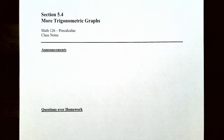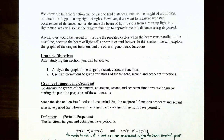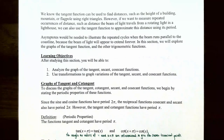Hi everyone, this is Vestor Primitant. This video will talk about more trigonometric graphs. We've already seen the tangent function can be used to find distances such as the height of a building, mountain, or flagpole using right triangles. However, if we want to measure repeated occurrences of distance — such as the distance a beam of light travels from a rotating light in a lighthouse — we're going to use the tangent function to approximate the distance using its period. Asymptotes will be needed to illustrate the repeated cycles when the beam runs parallel to the coastline, because the beam of light will actually appear to extend forever.